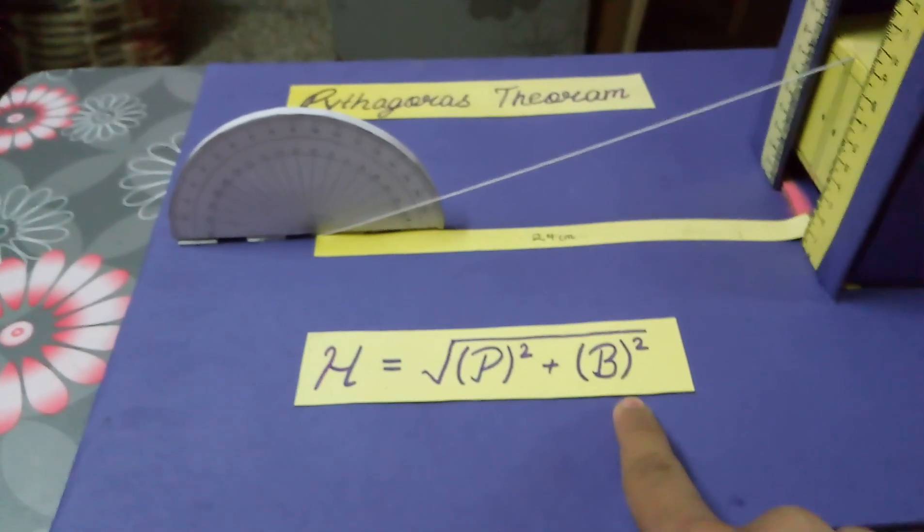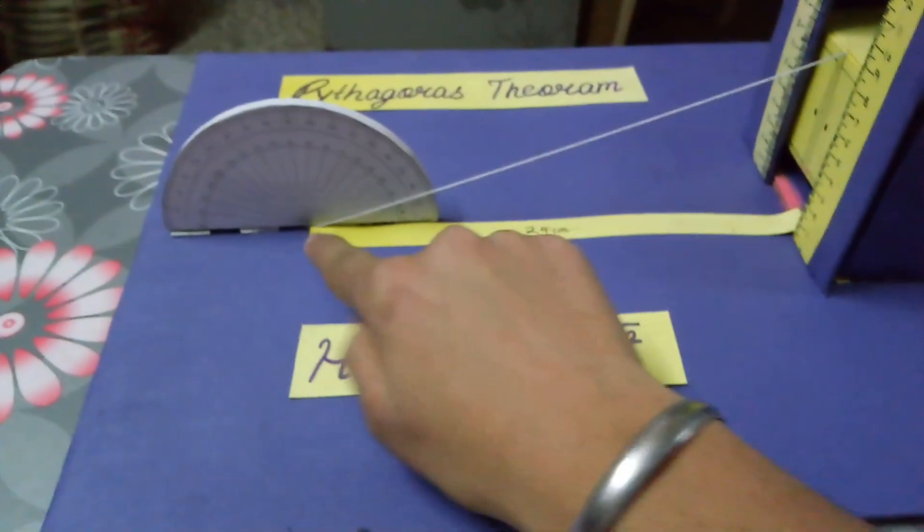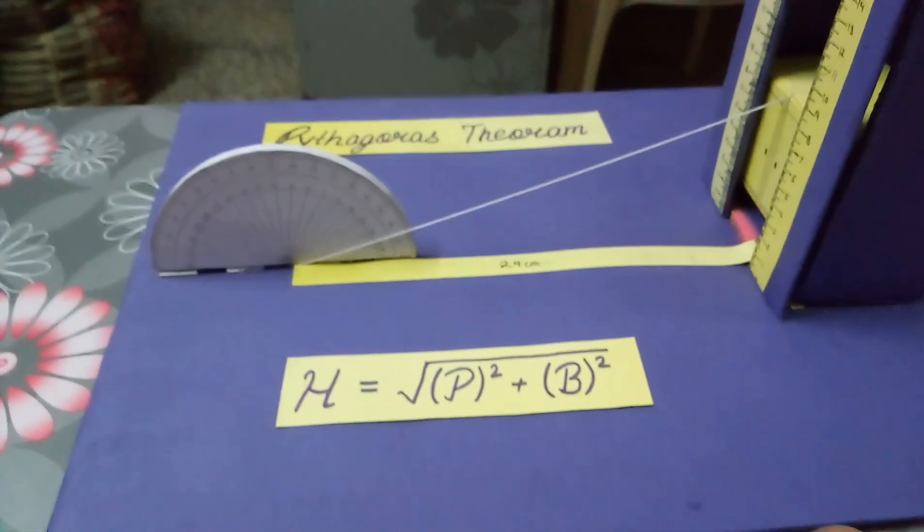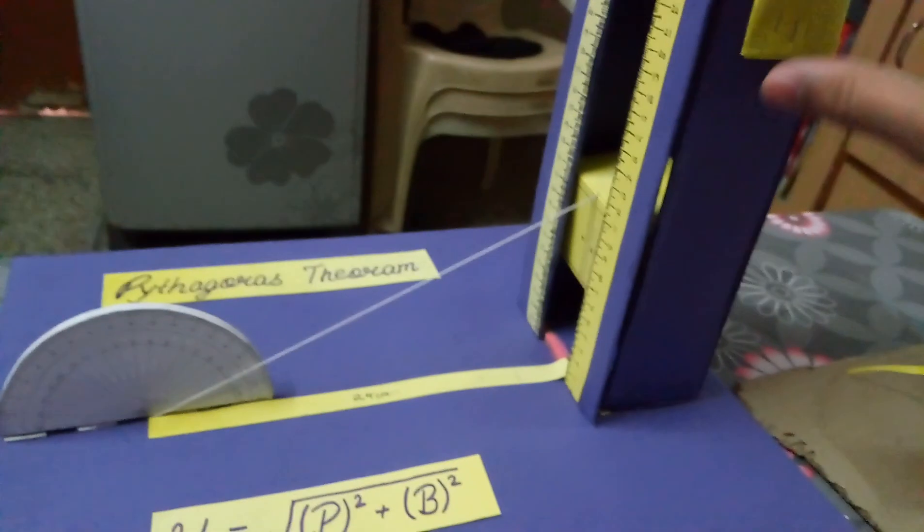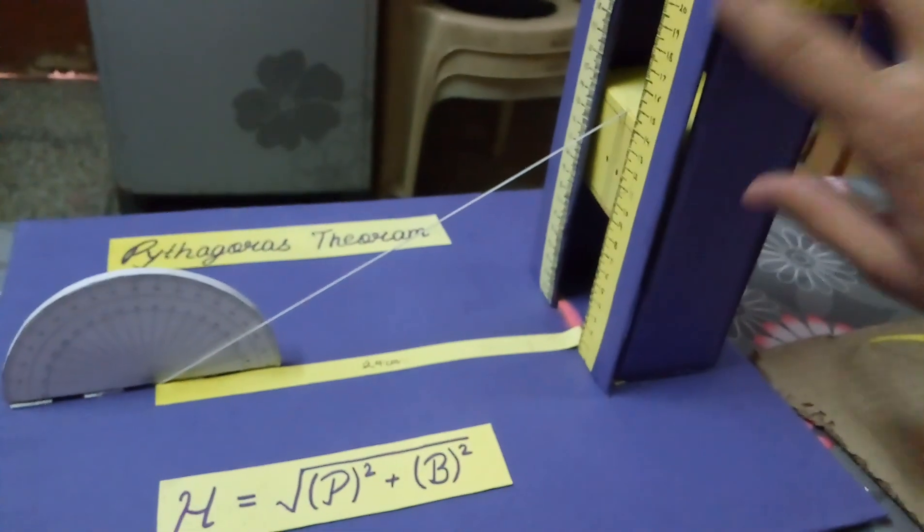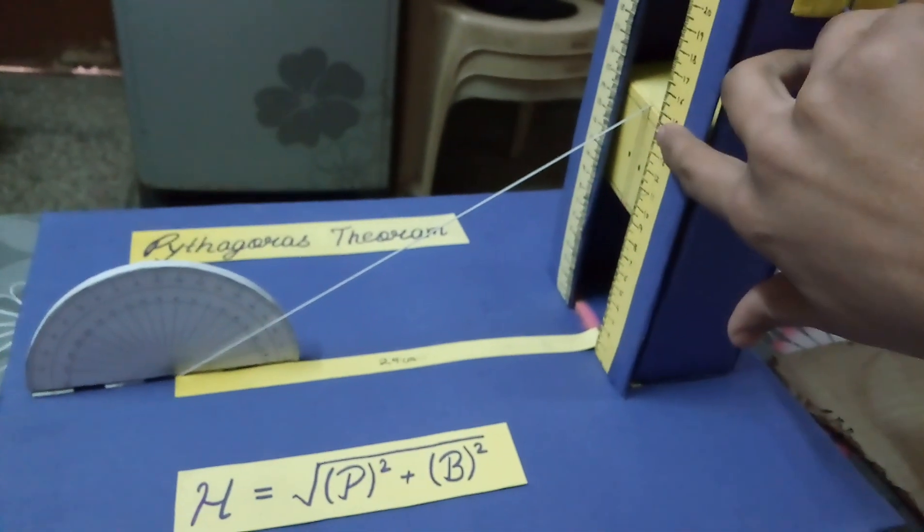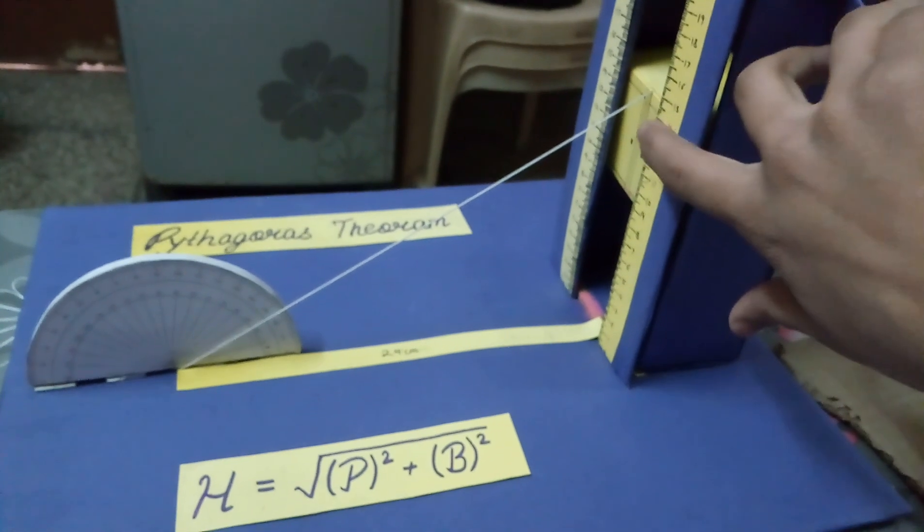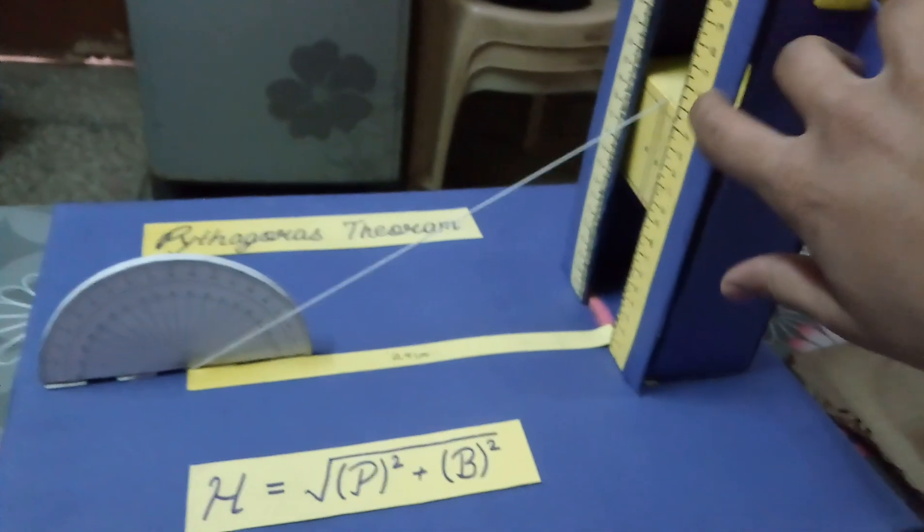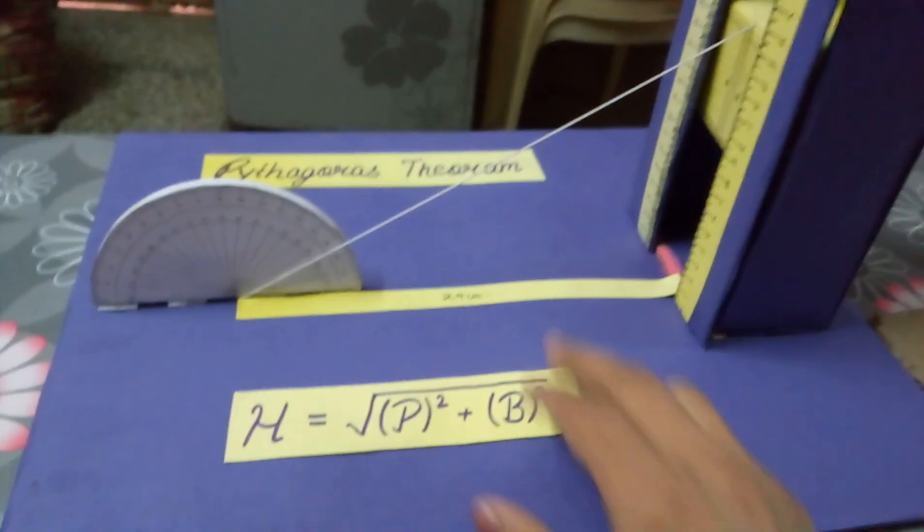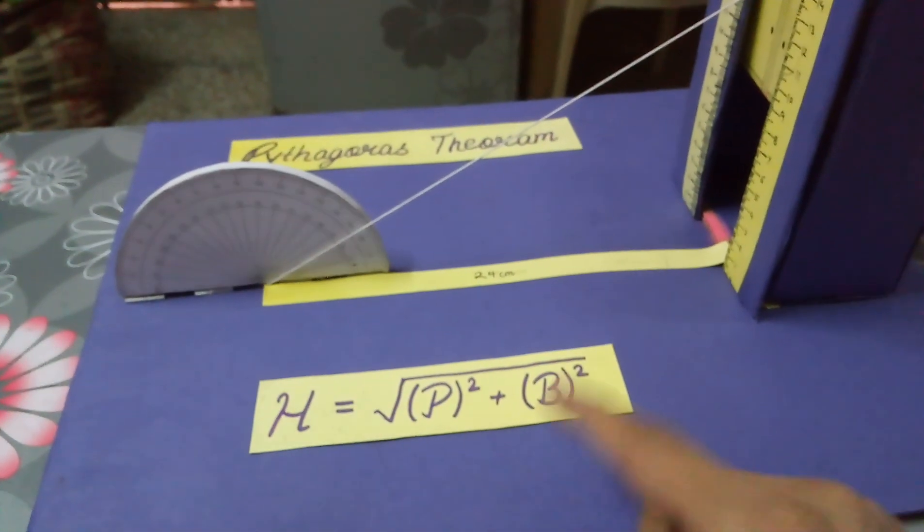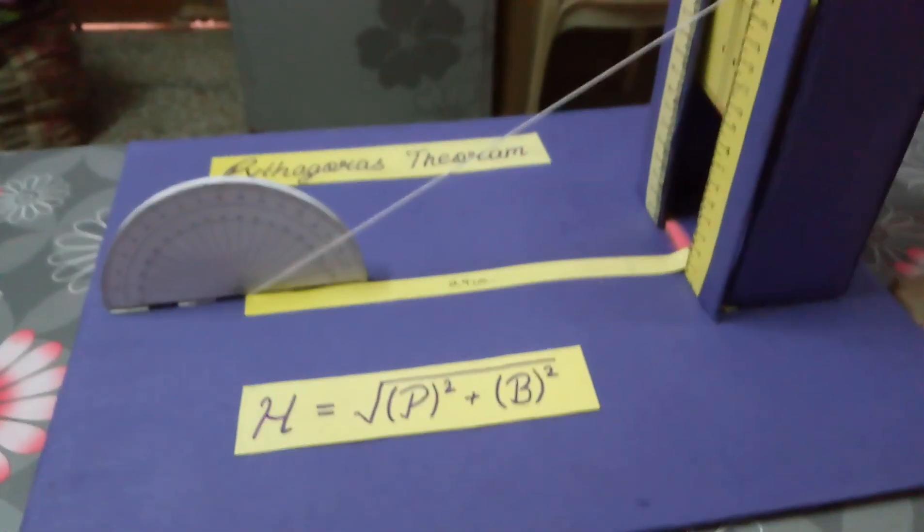First of all, what you need to do is move your lift upward, then measure what it is coming on the scale. Just write it down on paper and then make a square of it. Then add the square of this base and take the root of that, and finally you can find your hypotenuse.